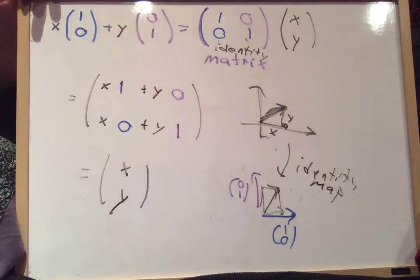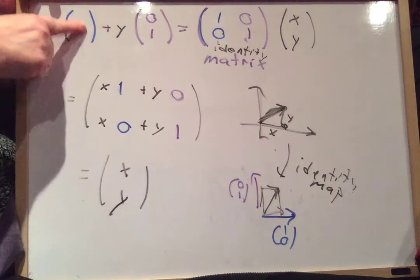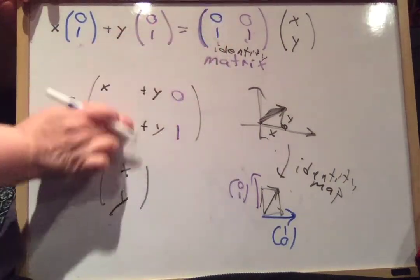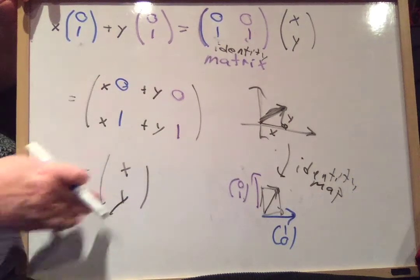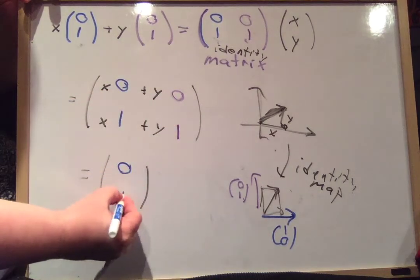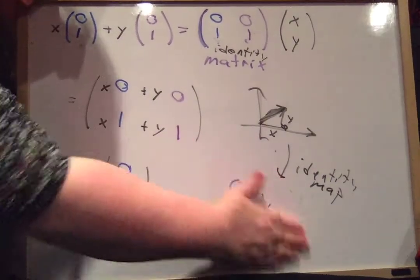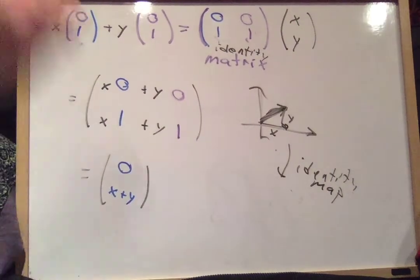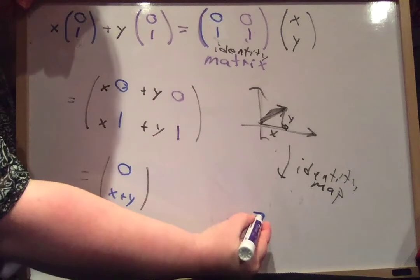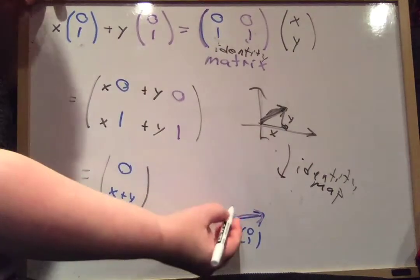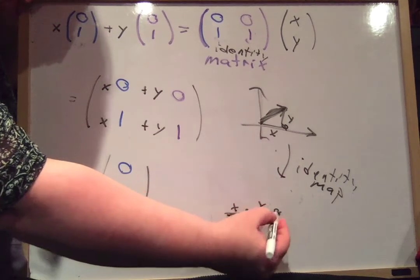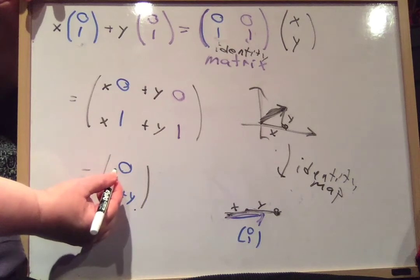So let's do a more interesting example. What happens if I do (0, 1) and (0, 1)? Our matrix is [0, 0; 1, 1]. What's the answer? x times 0 plus y times 0 is 0; x times 1 plus y times 1 is x plus y. Very strange. What happened is both of our vectors are exactly the same vector. So if I go x amount in the blue direction and y amount in the purple direction, my accumulation is x plus y in that direction, and I didn't go up at all.